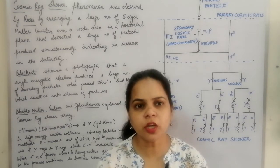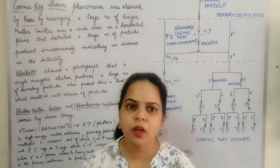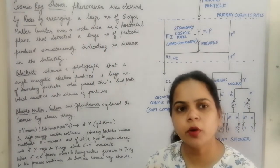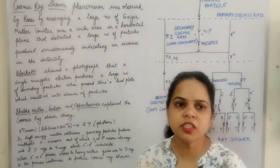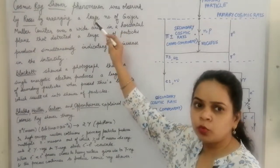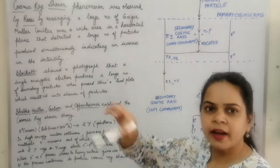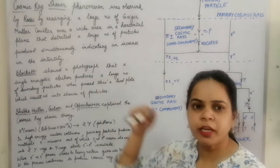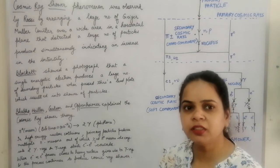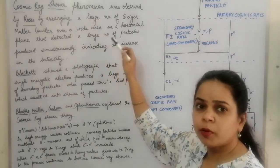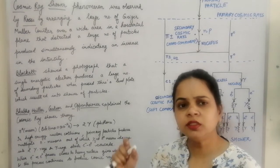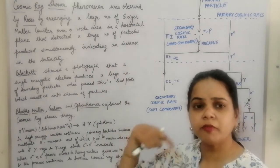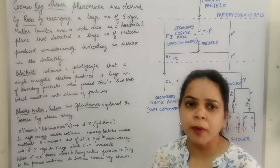Let's look at the history of the cosmic ray shower. Rossi was the first to explain the cosmic ray shower phenomenon. He arranged a large number of Geiger-Müller counters over a wide area in a particular plane. The GM counters detected the cosmic rays coming from the outer atmosphere, recording a large number of particles produced simultaneously — showing significant avalanche multiplication of the particle intensity.